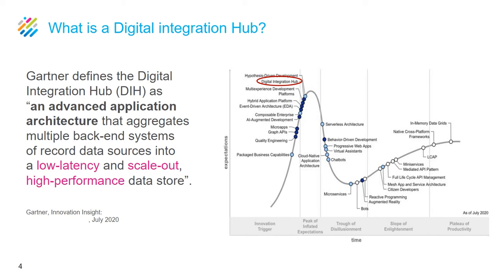What is a digital integration hub? Many people are still not aware of them. Many people know operational data stores — well, this is the next generation of operational data stores, because they also provide analytics. This was coined just last year by Gartner, and it is an architecture that aggregates data from multiple systems of record.